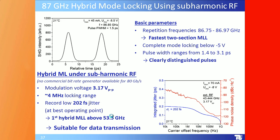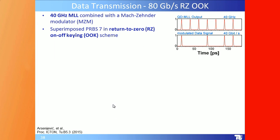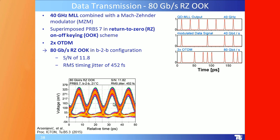Data transmission experiments at 80 Gbit/s return-to-zero on-off keying: a 40 GHz mode-locked quantum dot laser combined with a Mach–Zehnder modulator and PRBS7 pattern in RZ scheme, then 2× OTDM to reach 80 GHz RZ, in a back-to-back configuration with an excellent signal-to-noise ratio of close to 12 dB.